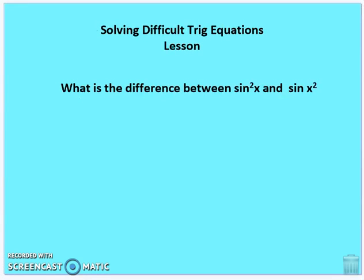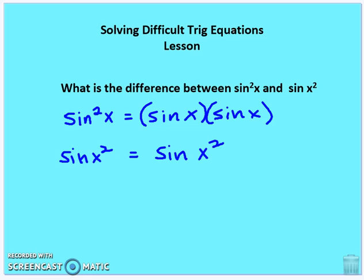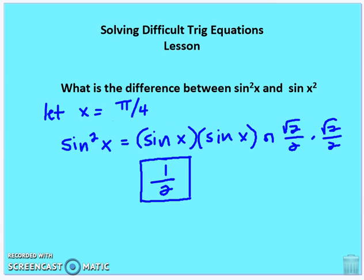Before we get into that, I want to cover a couple things quickly. What is the difference between sine squared x and sine x squared? Sine squared x is sine of x times sine of x, and sine x squared is just sine of x, squared. If we evaluate x as pi over 4, sine squared x is sine x times sine x. Sine of pi fourths is root 2 over 2, so root 2 over 2 times root 2 over 2 equals 1 half.